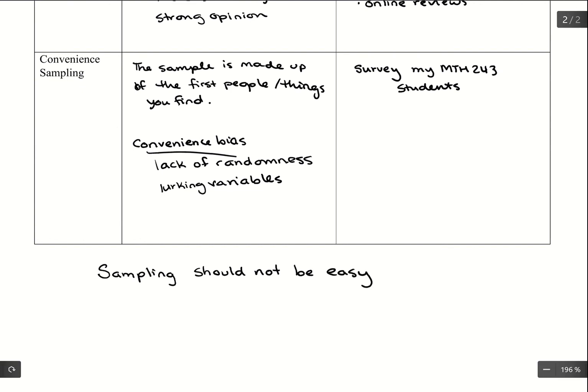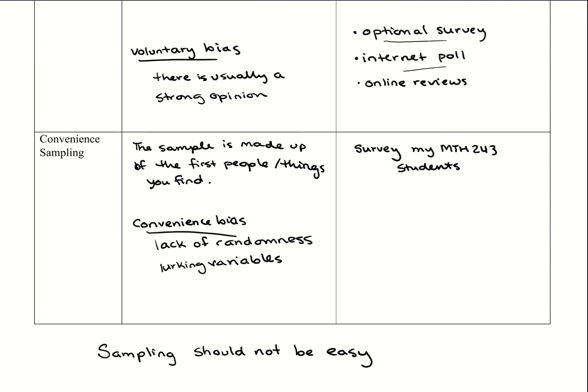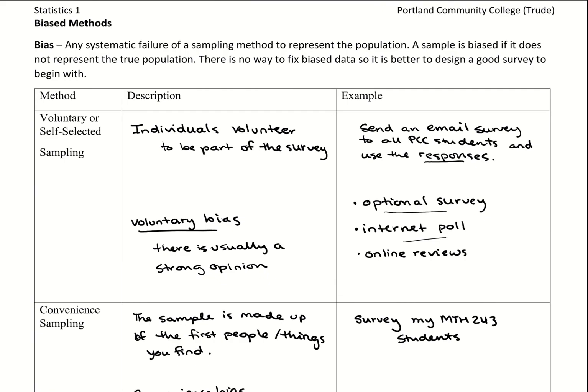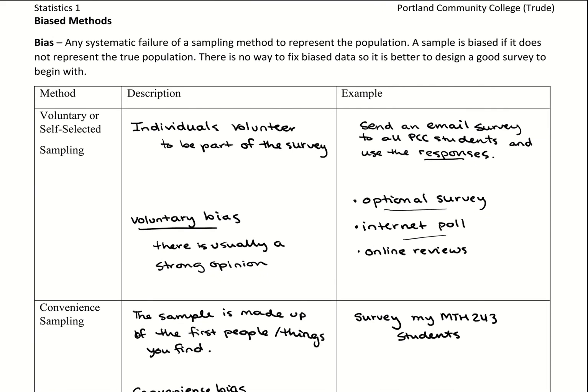We want to avoid voluntary and convenience sampling. However, voluntary bias is often unavoidable because as human beings, things have to be voluntary — we can't force people to answer surveys. You can offer incentives, but that might introduce its own bias. So we just want to be careful of any bias that could misrepresent our data.